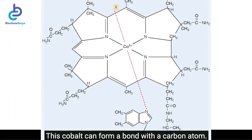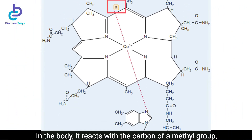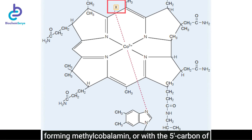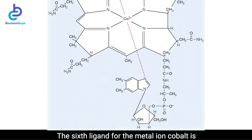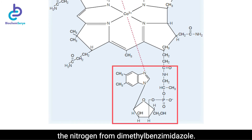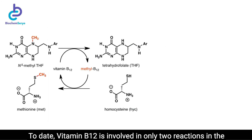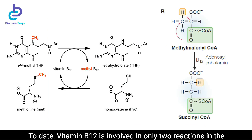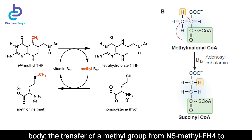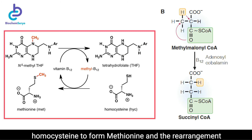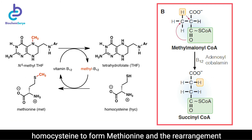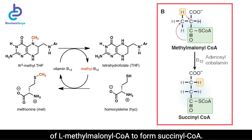This cobalt can form a bond with a carbon atom. In the body, it reacts with the carbon of a methyl group, forming methylcobalamin, or with the 5' carbon of 5'-deoxyadenosine, forming 5'-deoxyadenosylcobalamin. The sixth ligand for the metal ion cobalt is the nitrogen from dimethylbenzimidazole. To date, vitamin B12 is involved in only two reactions in the body: the transfer of a methyl group from N5-methyl FH4 to homocysteine to form methionine, and the rearrangement of L-methylmalonyl-CoA to form succinyl-CoA.